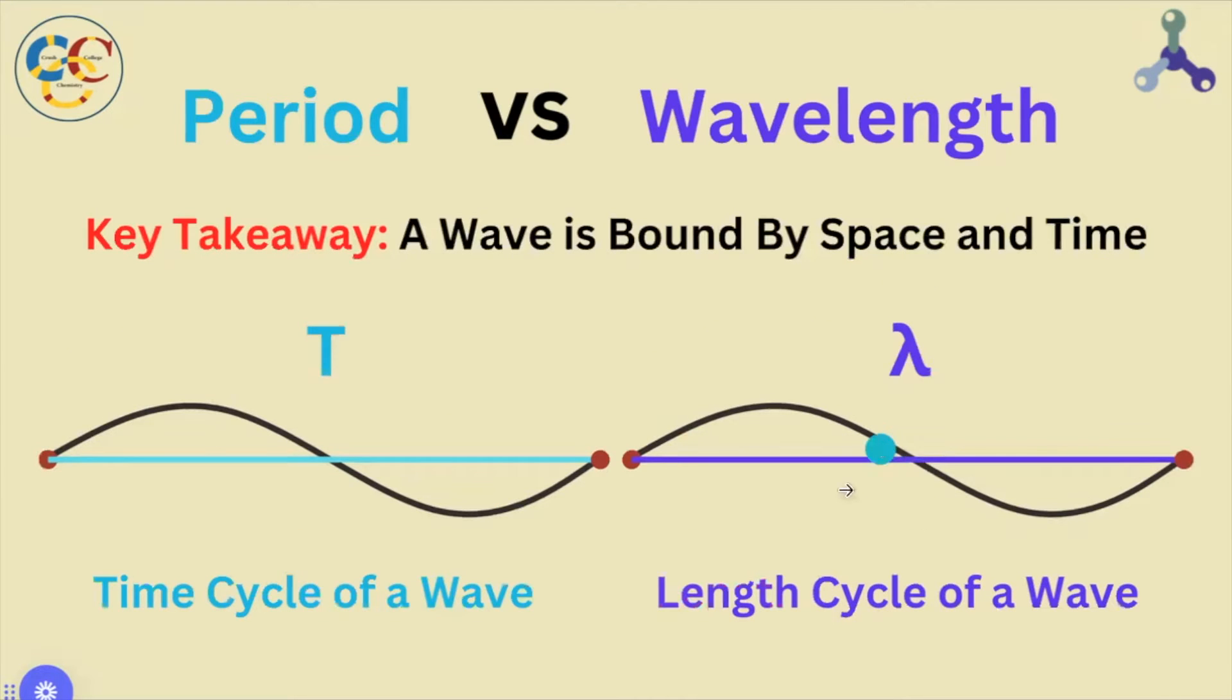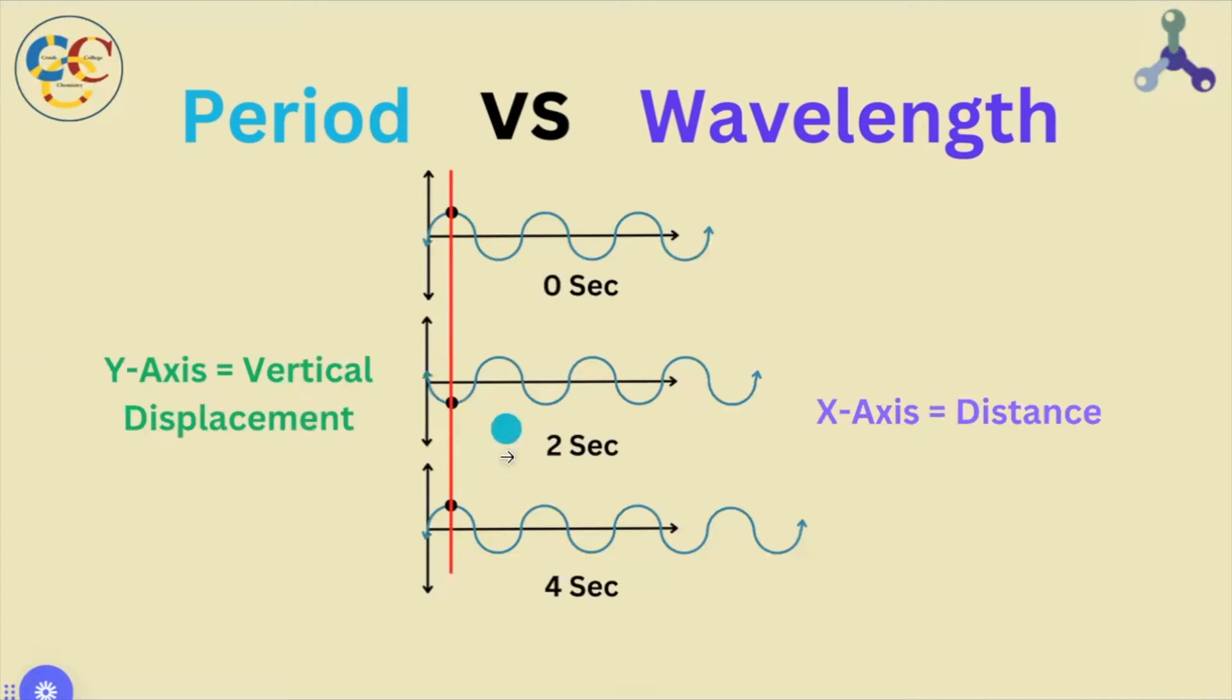This tells us something crucial. A wave, and consequently light when we model it as a wave, is bound by both space and time. Our model here illustrates this, in which we map how one point along the wave oscillates up and down against the distance progress of the wave, which is the x-axis.